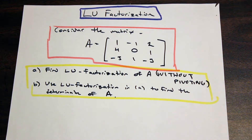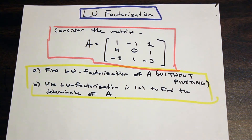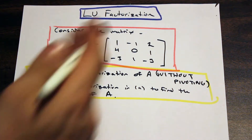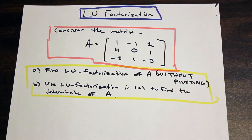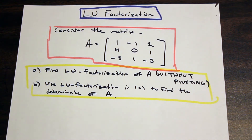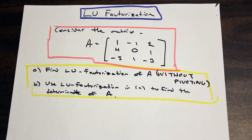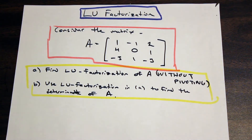Welcome back to AF Math and Engineering. We are going to do a quick question on LU factorization — a numerical analysis example. Consider the matrix A, which is a 3 by 3 matrix. The question asks us to find the LU factorization of A without pivoting, and the second part asks us to use LU factorization to find the determinant of A.